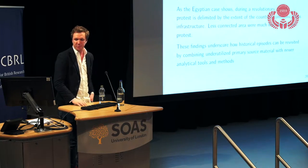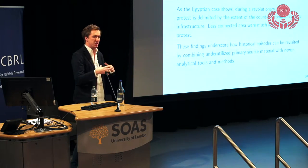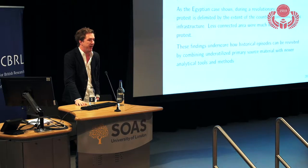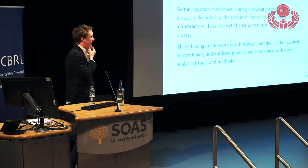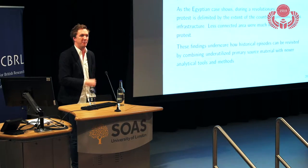The conclusions: relational accounts of diffusion—the idea that protest spreads purely through people connecting with each other—elide something quite important: the built environment structures the patterning of protest both in timing and location. As the Egyptian case shows, during a revolutionary episode protest is really delimited by the extent of the country's communications infrastructure. Less connected places find it very difficult for protest to spread there. These findings underscore how you can revisit historical episodes with new data and newer analytical techniques to get really interesting results.